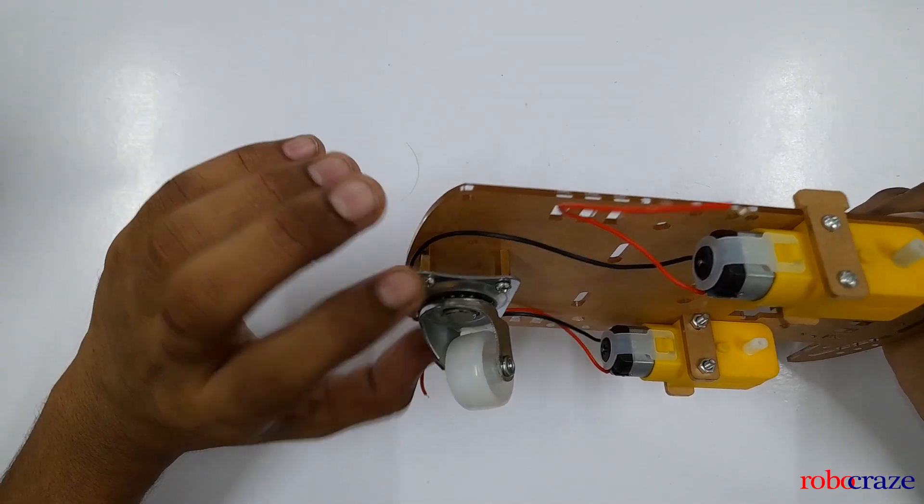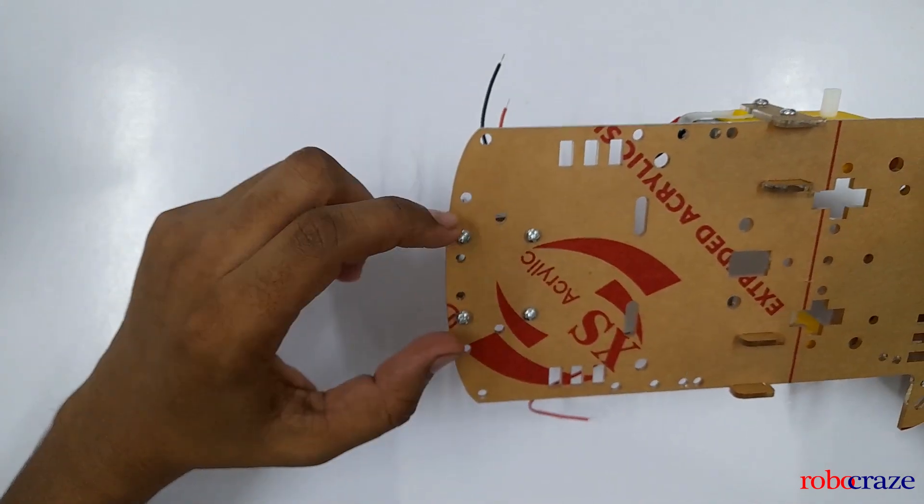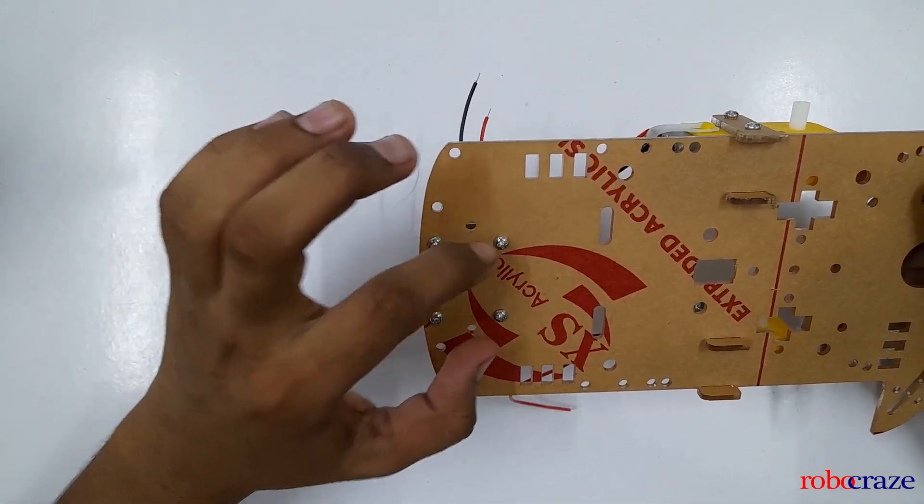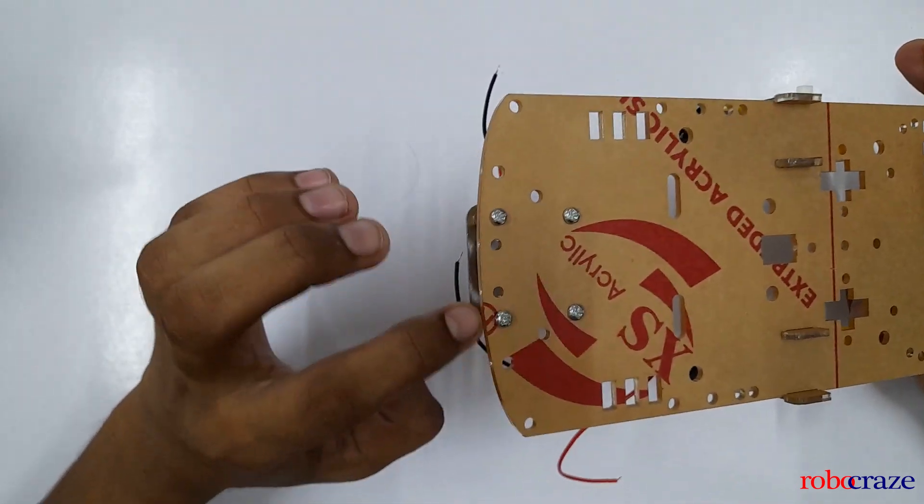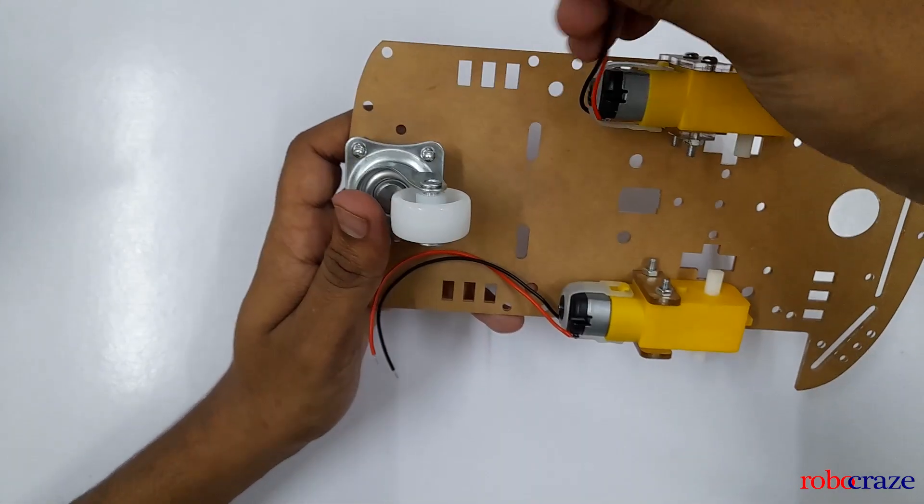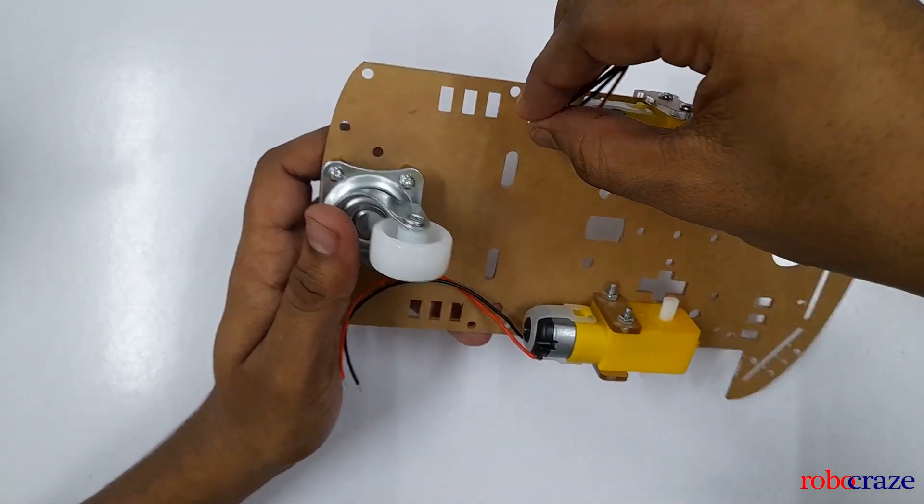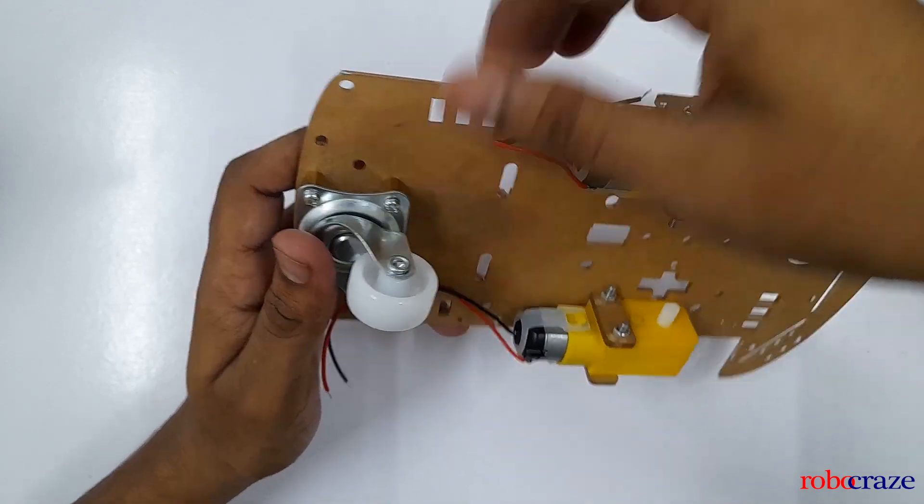We will mount the universal wheel using the spacers onto the chassis. Be careful about the holes. The holes should match with the spacers gap and should be aligned properly. Next up we will be passing these wires from these holes, so it's always best practice to pass it from here so that it does not disturb any other connections.